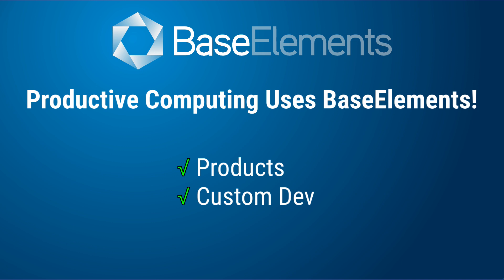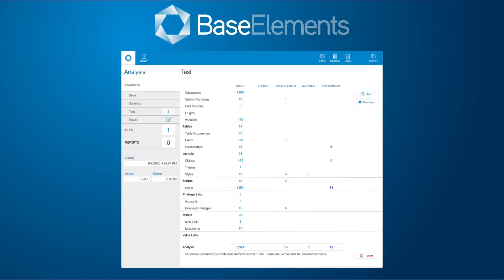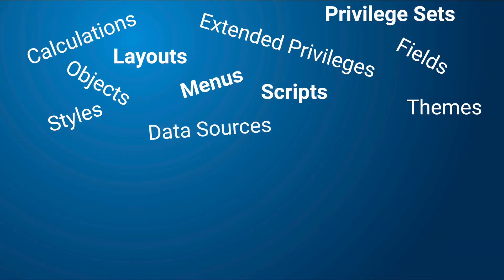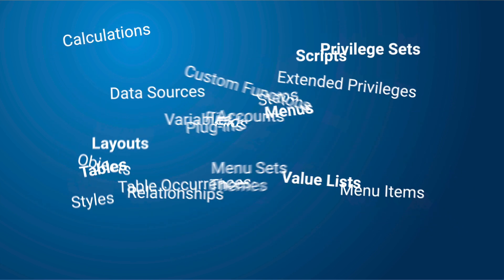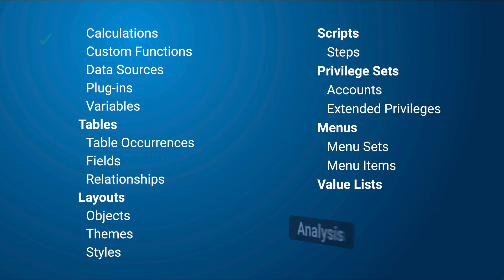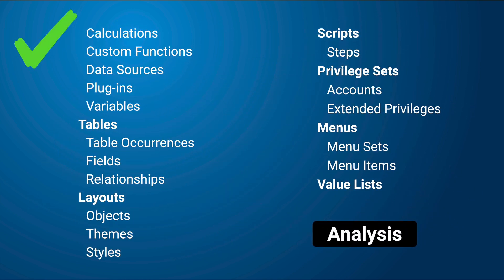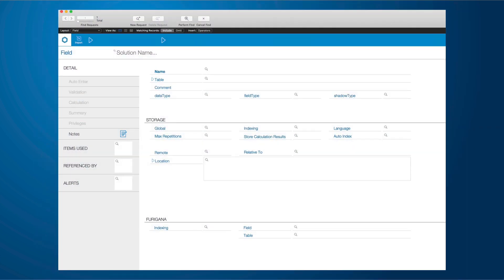Base Elements is essentially a database for your database. It analyzes all the elements of a given FileMaker solution and organizes them in a way that has more meaning. And because Base Elements is actually a FileMaker file, you can search for any element in any combination using FileMaker's built-in powerful find and search capabilities.